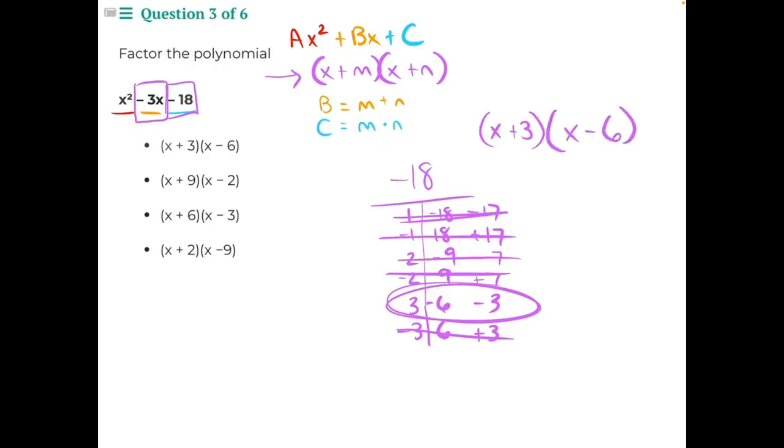We will use distributive property and the FOIL method to double check our answer. If we start with the front, x times x will give us x². Then we move on to the outer numbers, x times negative 6 would give us negative 6x.